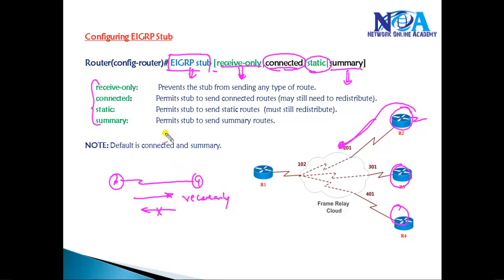These are optional parameters. If I don't use any optional parameters, by default it is going to advertise all the connected interfaces and any summary routes. The stub router will not be sent query messages in case of link failures.